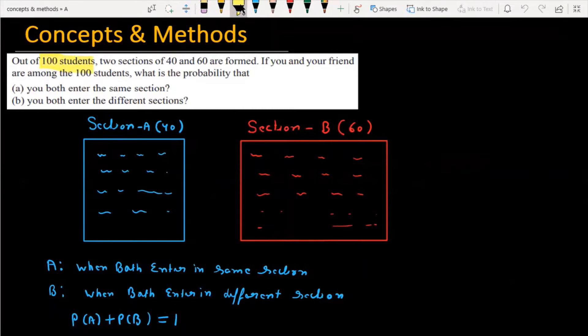Out of 100 friends, two sections of 40 and 60 are formed. If you and your friend are among the 100 friends, what is the probability that you both enter the same section and you both enter the different section?